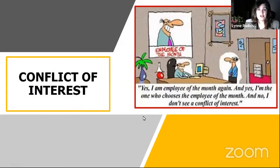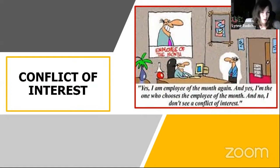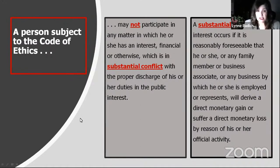We're going to talk about conflicts of interest. Conflicts of interest and nepotism are pretty much the bread and butter of the Rhode Island Ethics Commission. A person subject to the code may not participate in any matter in which he or she has an interest — financial or otherwise — which is in substantial conflict with the proper discharge of their duties in the public interest. A substantial conflict occurs if it is reasonably foreseeable that they, any family member, business associate, or business by which they are employed will derive a direct monetary gain or suffer a direct monetary loss by reason of their official activity.